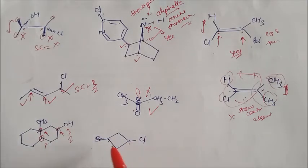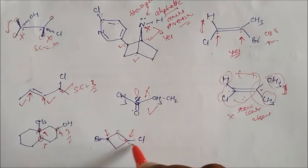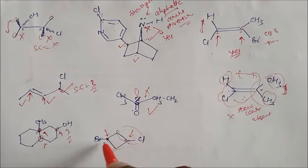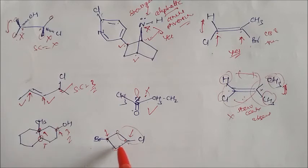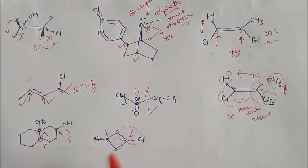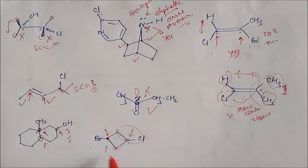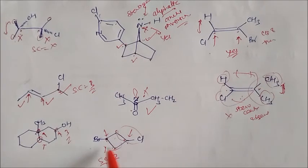Now in this carbon, how many stereogenic centers are there? One, two — so these two are stereogenic centers. You can see they have different groups. One is Br, and there is another group. From here and from there — one group here and one group here — different groups are there. So we can see it has stereogenic centers. This molecule has two stereogenic centers — this one and this one.